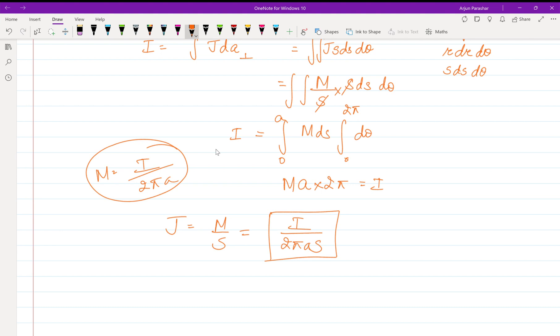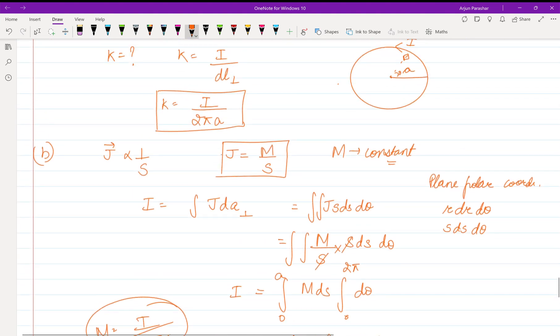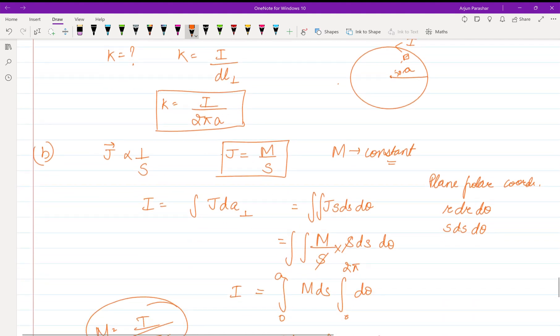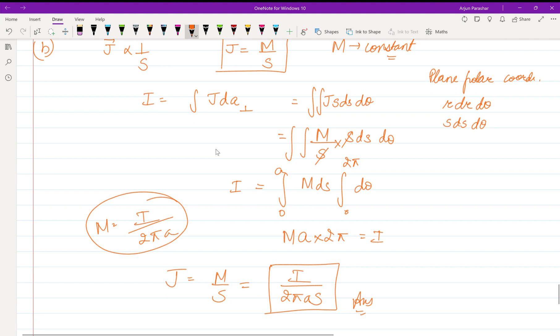This is the volume current density we are getting if volume current density is inversely proportional to the distance from the axis. So I hope you understood the question. That's all for this video. See me in the next video. Bye bye.